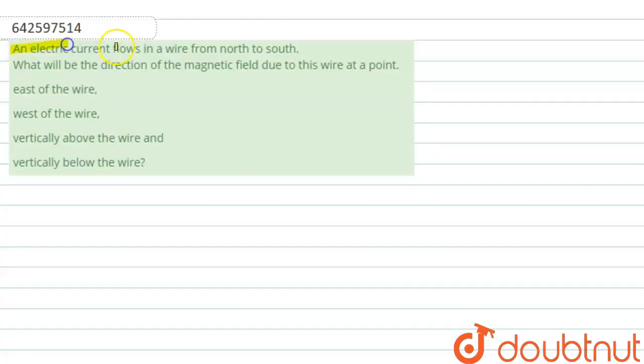An electric current flows in a wire from north to south. What will be the direction of the magnetic field due to this wire at a point east of the wire, west of the wire, vertically above the wire, and vertically below the wire?